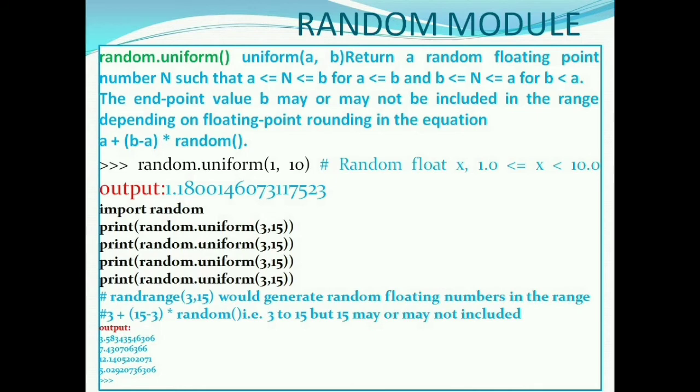The uniform function returns a random floating point number where both the upper limit and lower limit are inclusive. random.uniform 1 to 10 will generate floating point numbers between 1.0 to 10.0.